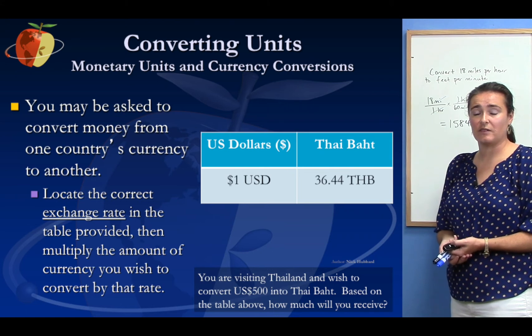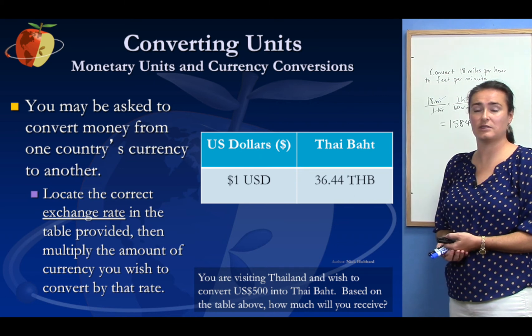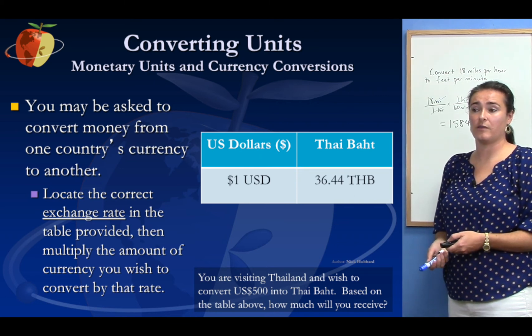Well for each US dollar, we know it's 36.44 baht, so what I would do is do 500 multiplied by 36.44 to give me the result.